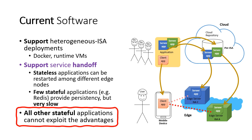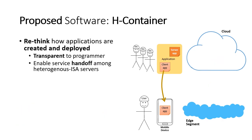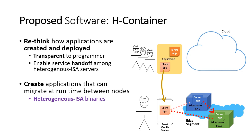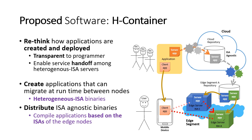We also measured that ad hoc persistency is lower than migration. We focus on this category of applications and we propose Edge Container. Edge Container is a new software approach which rethinks the way stateful applications are created and deployed, but not the way they are written. It is transparent to application developers, while it enables applications to migrate among servers with different CPUs. Edge Container introduces a methodology to create applications that can migrate at runtime between nodes of different ISA — specifically, heterogeneous ISA binaries — as well as introducing a new way to distribute applications. Applications are stored in the cloud in an ISA-agnostic form and compiled into native executables at the edge.